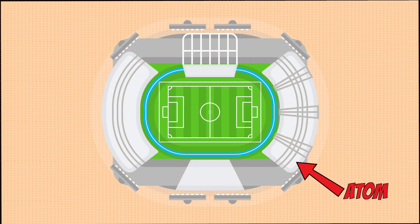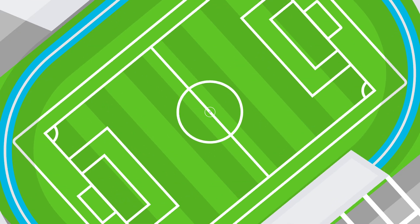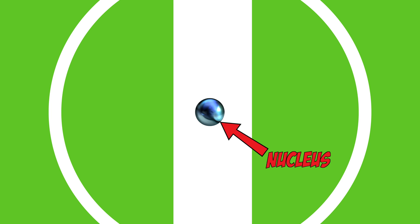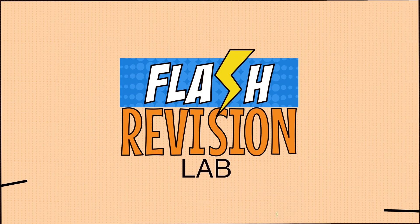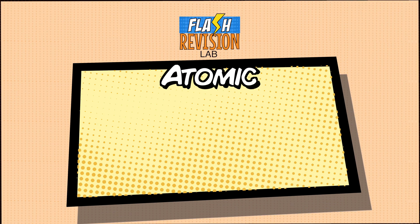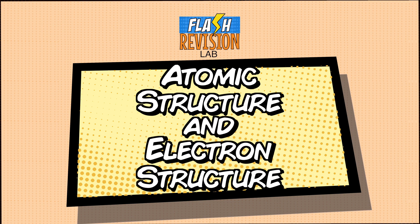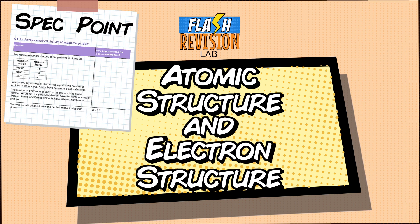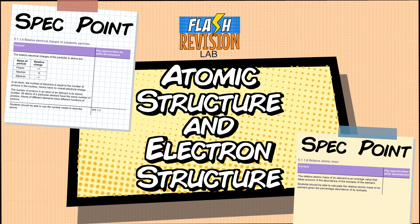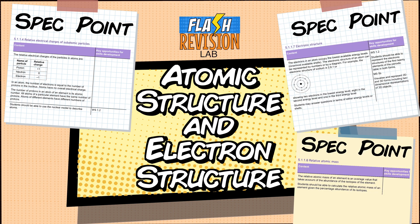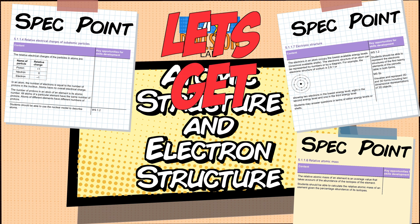Did you know that if the atom was the size of a football stadium, the nucleus would be the equivalent of the size of a small marble in the middle? Here's a flash revision guide on atomic structure and electron structure. In this video we'll cover what an atom is made out of, relative atomic masses, and how electrons are arranged in an atom.